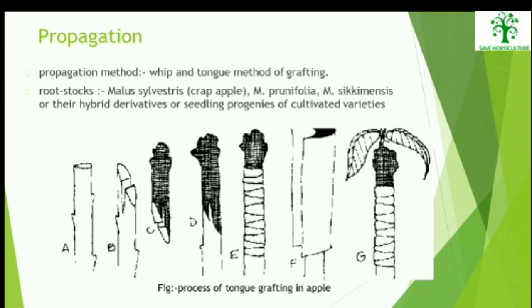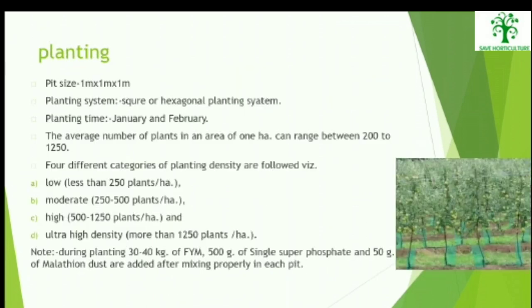Propagation: The propagation method includes the whip and tongue method of grafting. The root stocks include crab apple (Malus prunifolia) or their hybrid derivatives or the seedling progenies of the cultivated varieties.